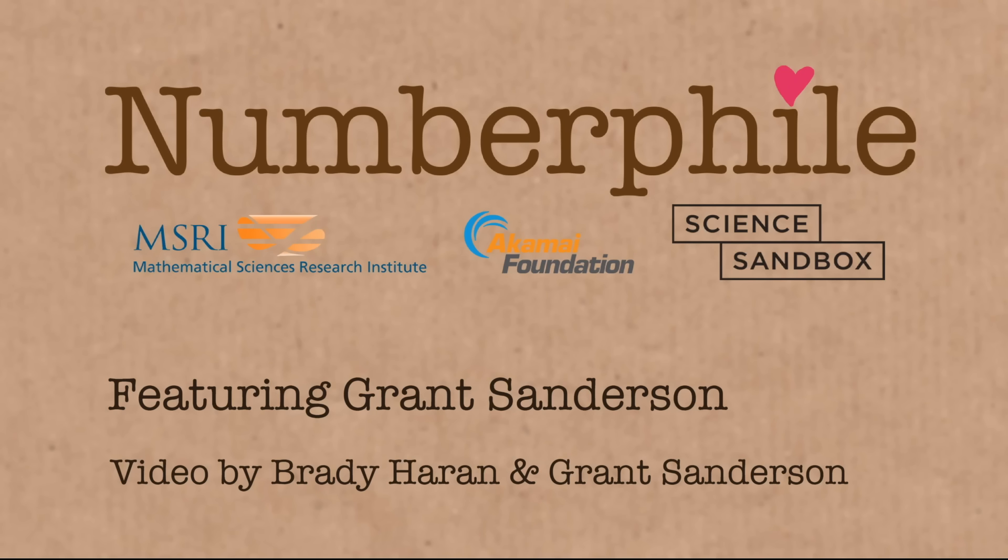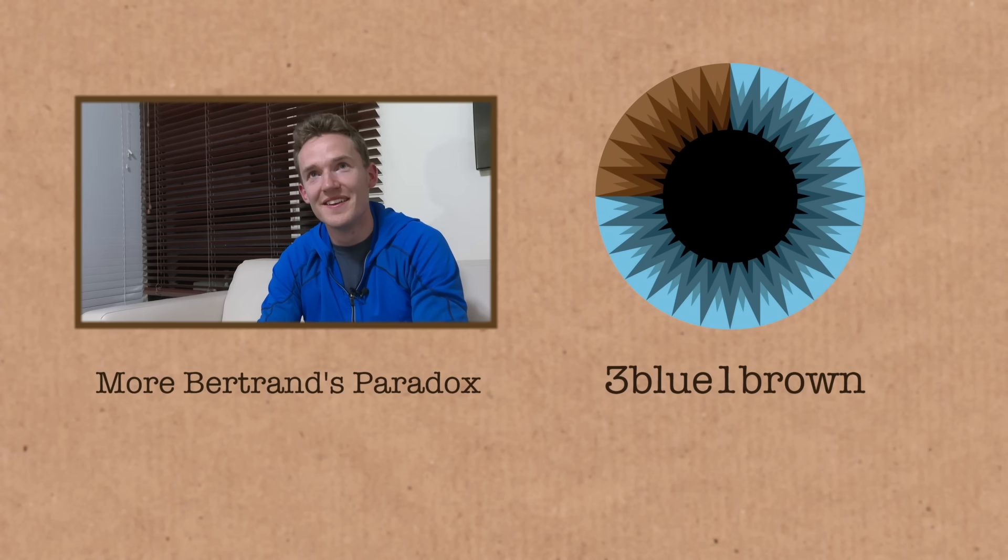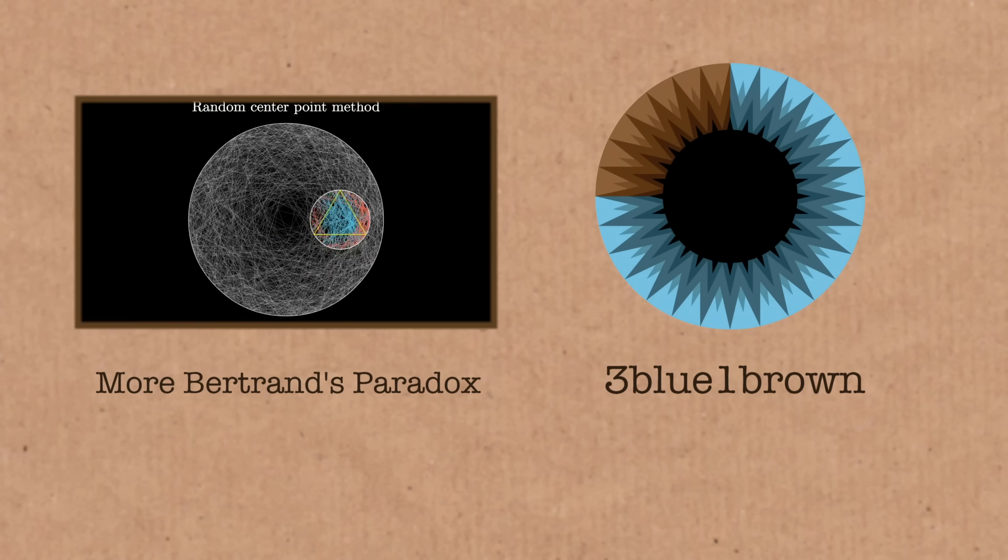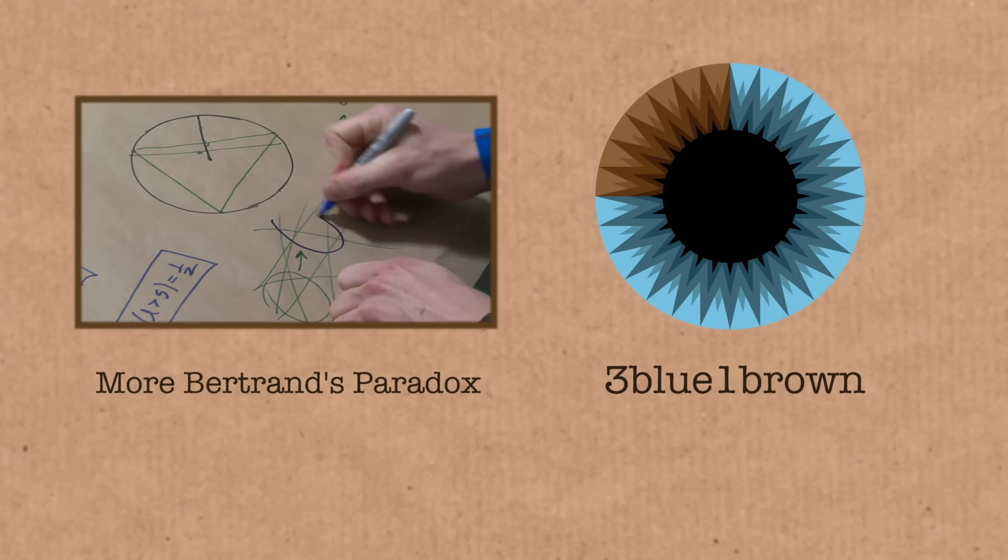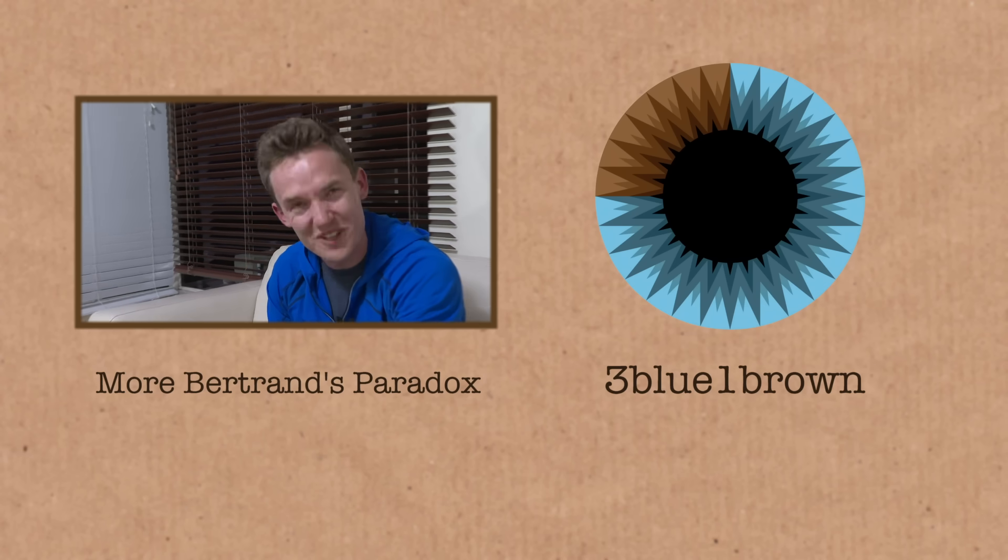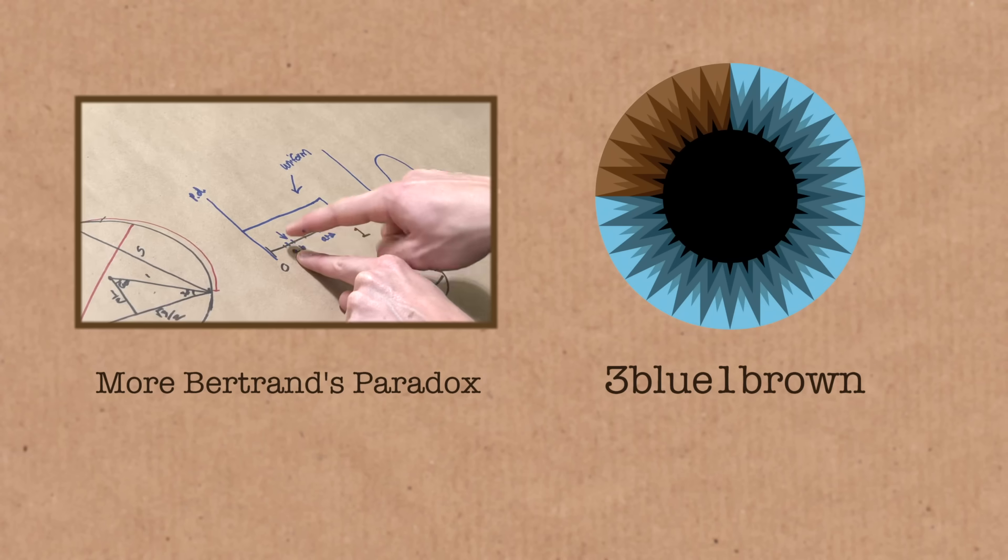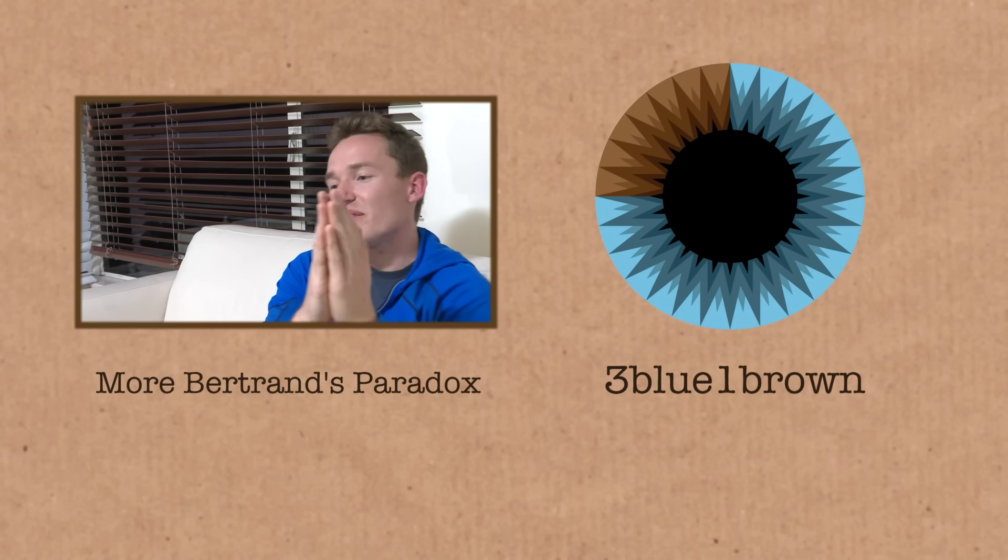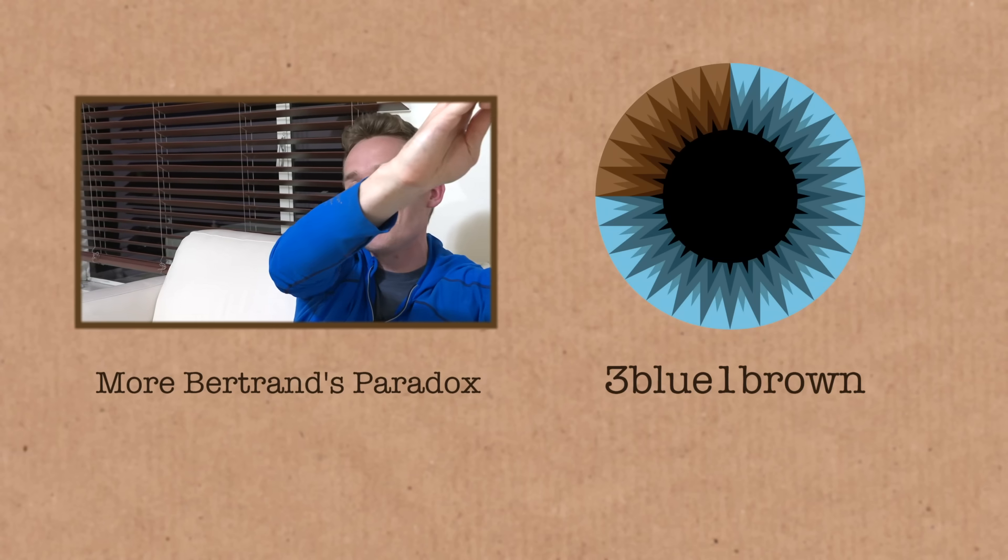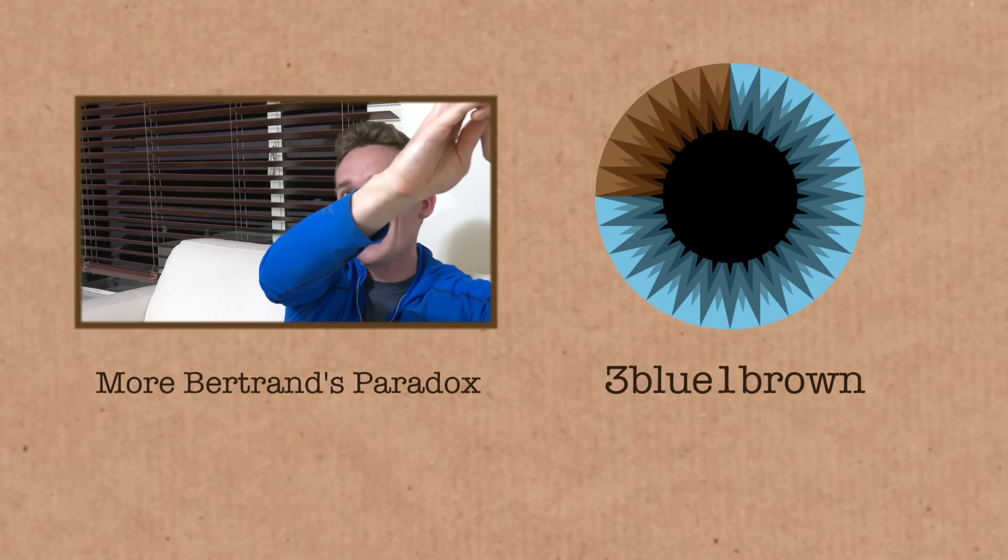So there's Bertrand's paradox, but you can probably guess Grant's got plenty more to say about it. Check out our second video, even more about Bertrand's paradox, where we go deeper. But the unambiguous thing is honestly what I would have thought would be the worst of the three methods. This was also made as a companion to Grant's own video about the average area of a cube's shadow. You'll find links to that in the usual places, and of course, on the 3Blue1Brown channel.